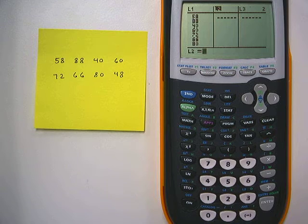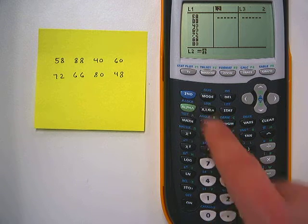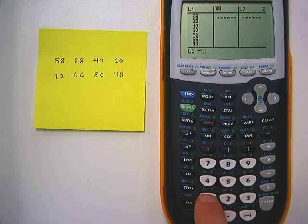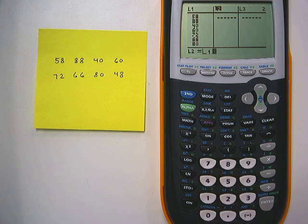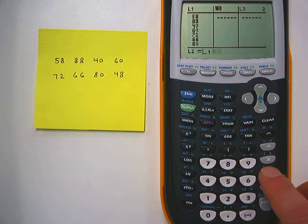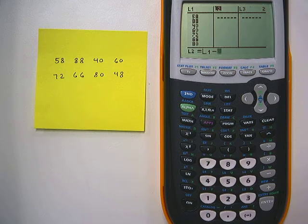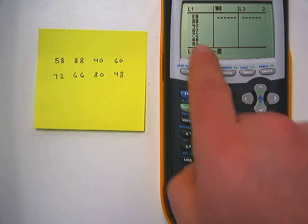The first thing we're going to do is get the list 1 marking there by hitting the second key and then the 1 key. You notice above the 1 key it has a little blue L1 so it types it out for us. We want the difference so we'll use the subtraction sign to use that operation.